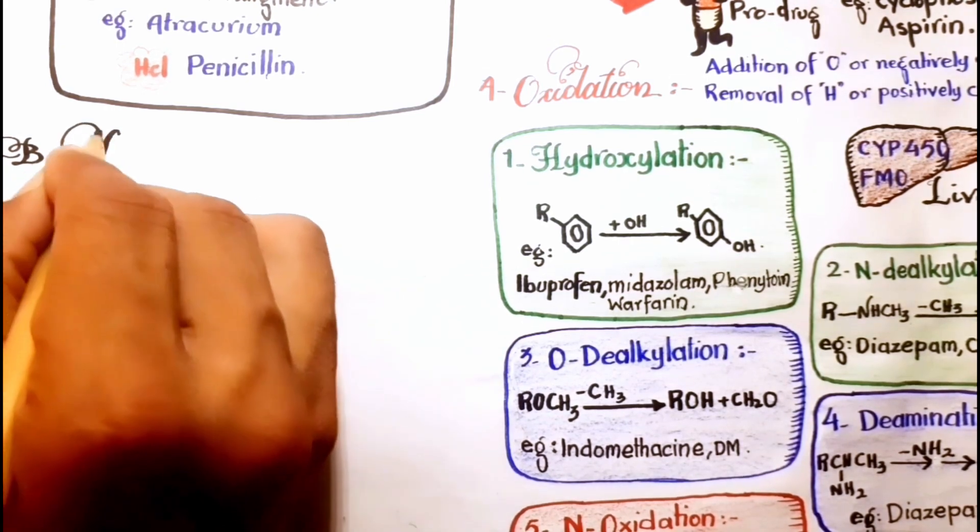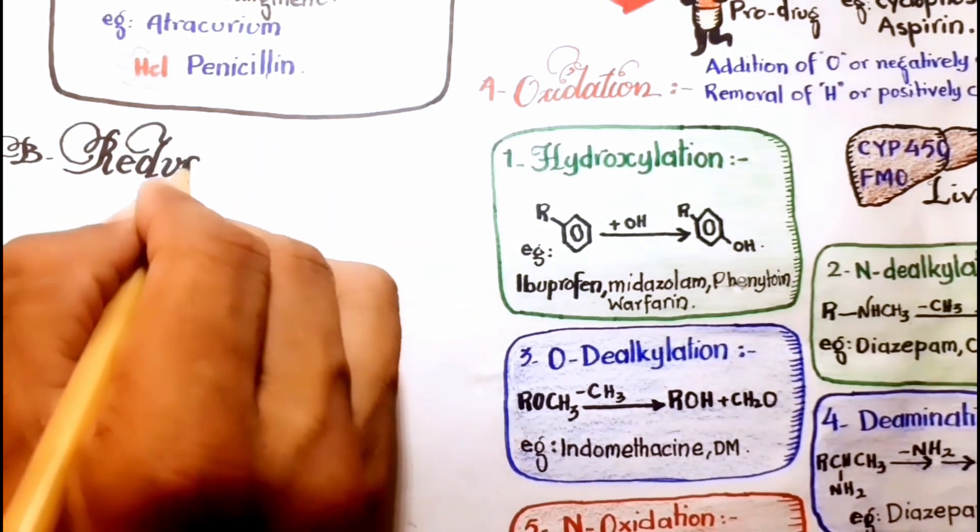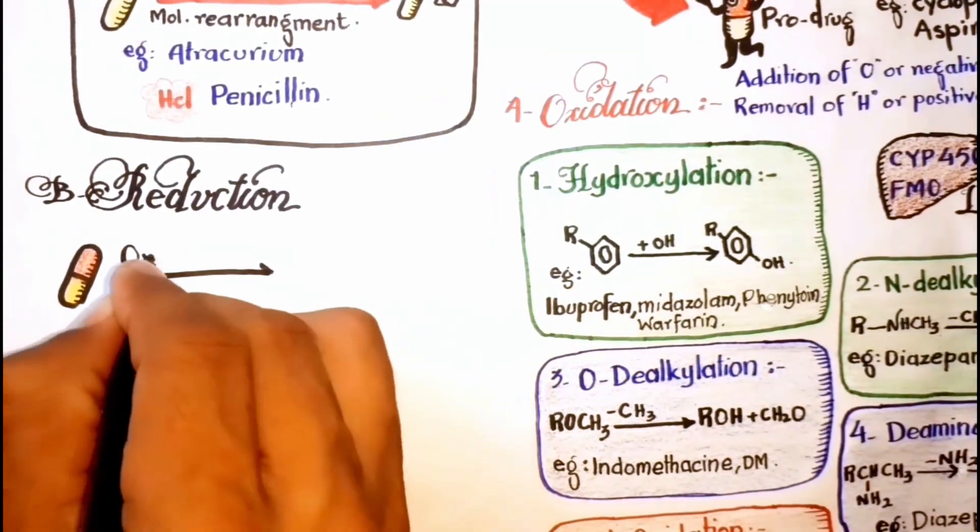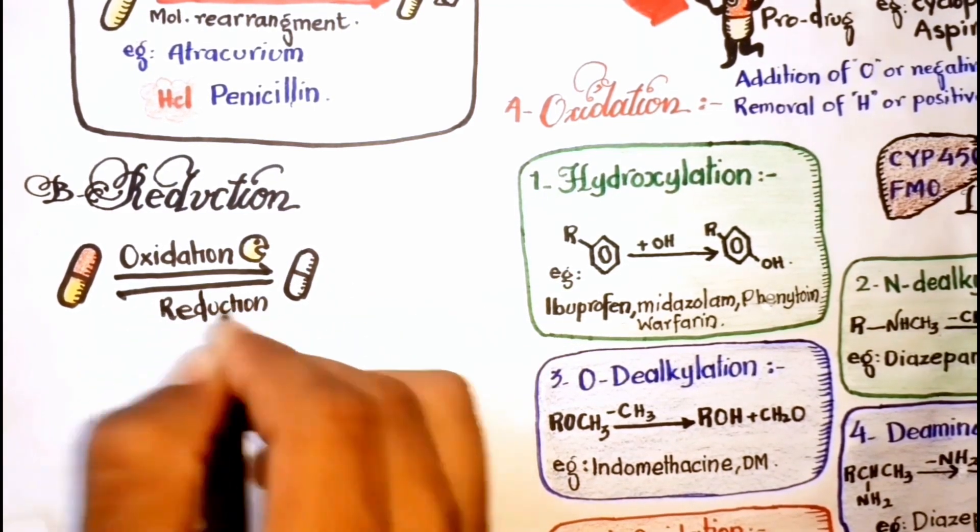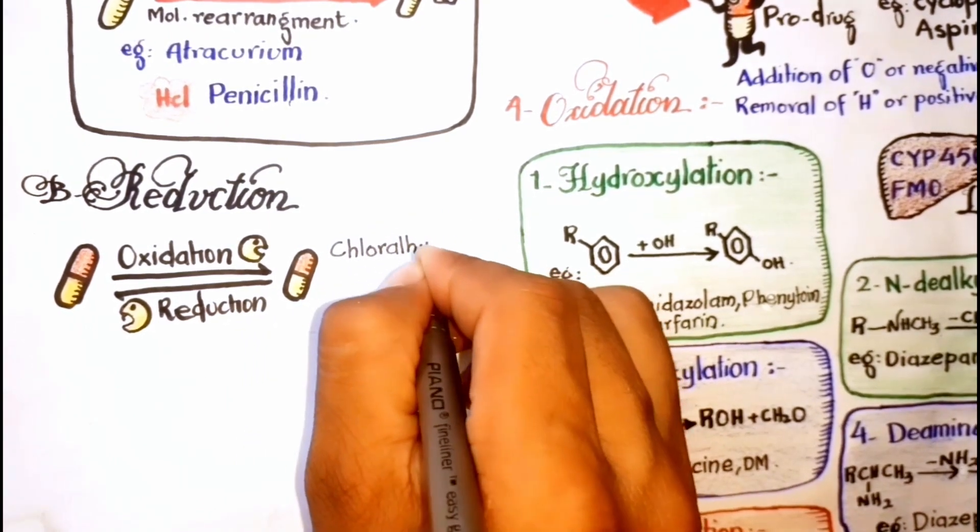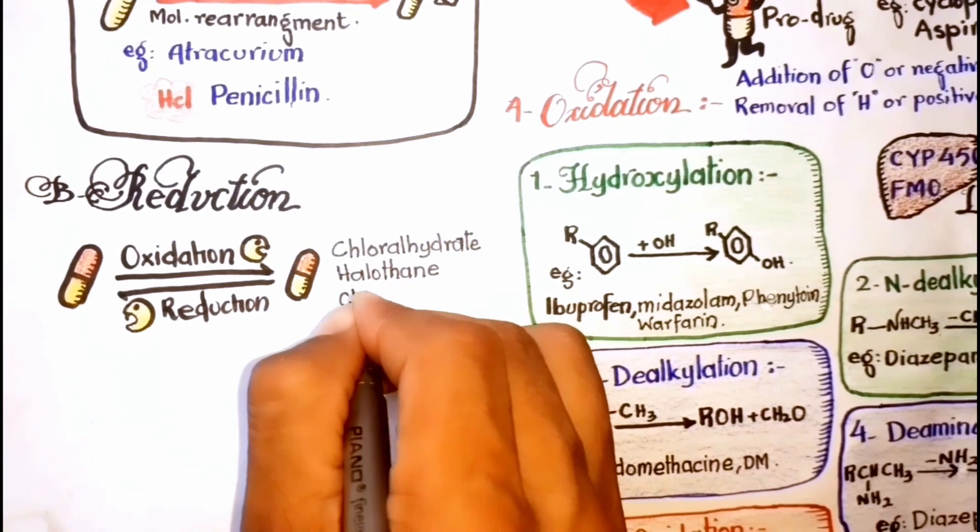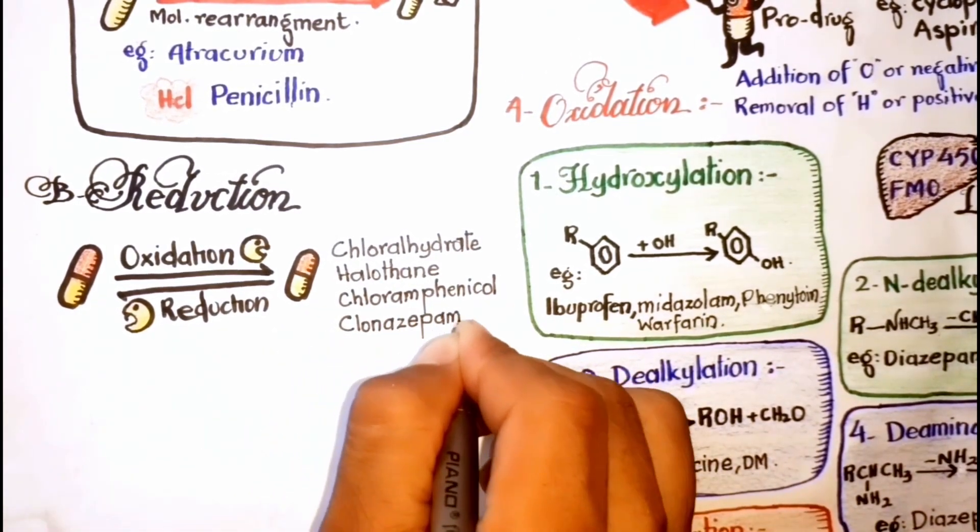The second type of phase 1 reaction is reduction. This reaction is the opposite of oxidation and involves CYP450 enzymes working in the opposite direction. Drugs mostly reduced are chloral hydrate, halothane, chloramphenicol, clonazepam, and naloxone.